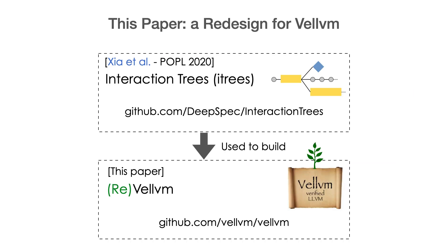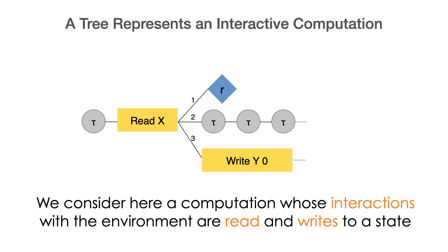In this work, we therefore rebuild Vellvm with completely different semantic tools. We use interaction trees, which our library introduced last year at POPL. The idea of interaction trees is that a computation, its dynamic, is represented as a potentially infinite tree.